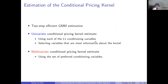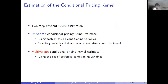For estimating the conditional pricing kernel, I use the two-step efficient GMM estimation. Since conditioning variables that are most informative about the pricing kernel are unknown, I first run univariate estimations using each of the 11 conditioning variables. Through statistical tests, I choose a set of preferred variables, and then using the chosen conditioning variables, I run multivariate estimation.